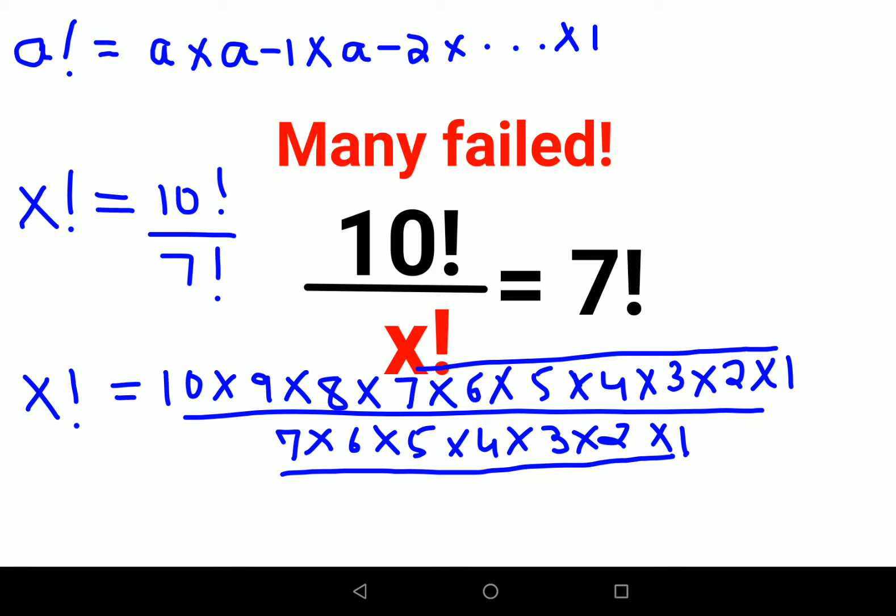So actually what we could have done is directly said x factorial is nothing but 10 into 9 into 8 into 7 factorial upon 7 factorial. And here you can directly cancel this.